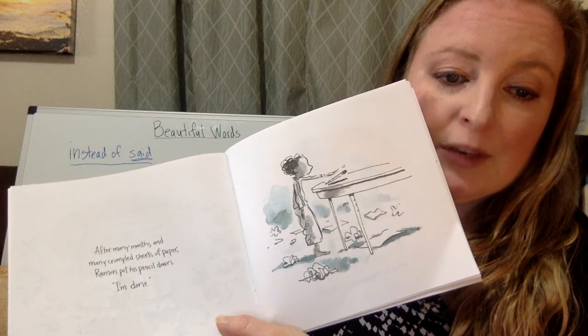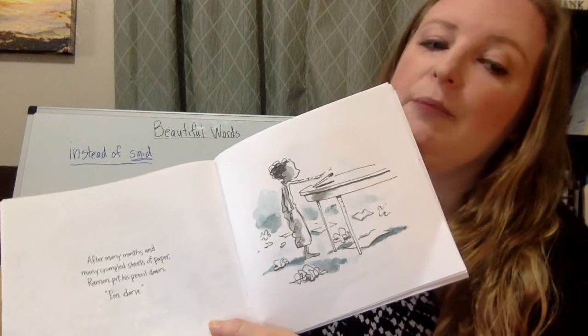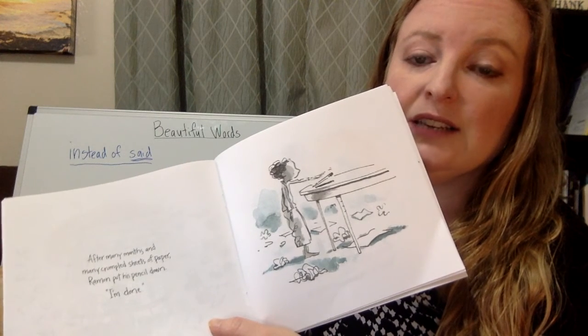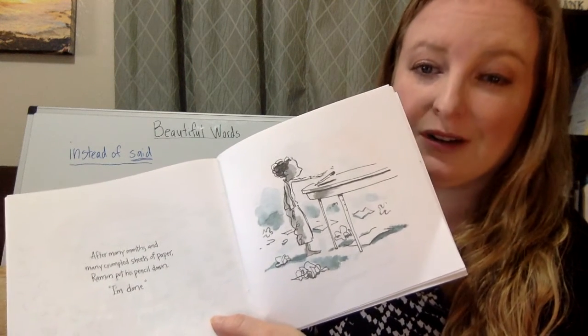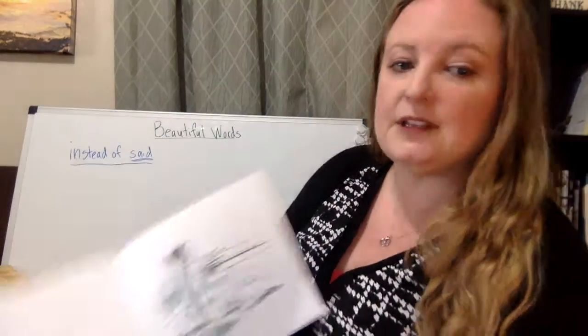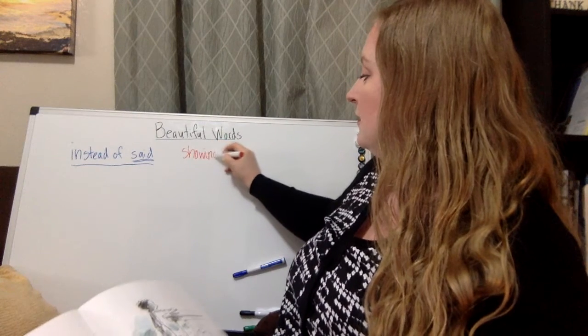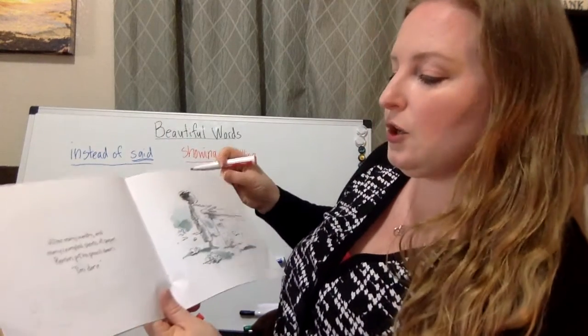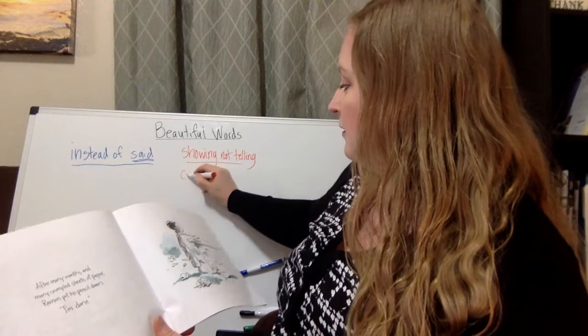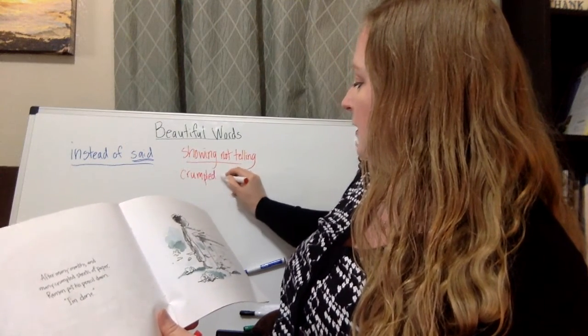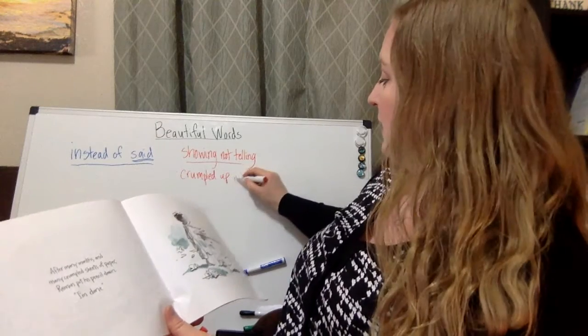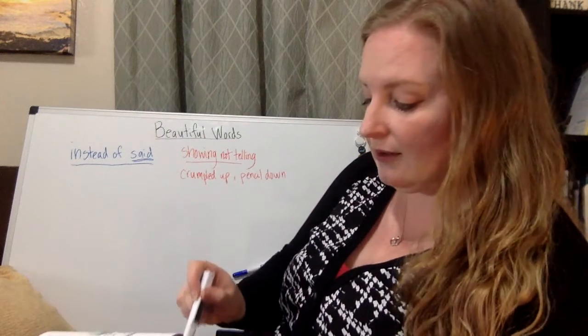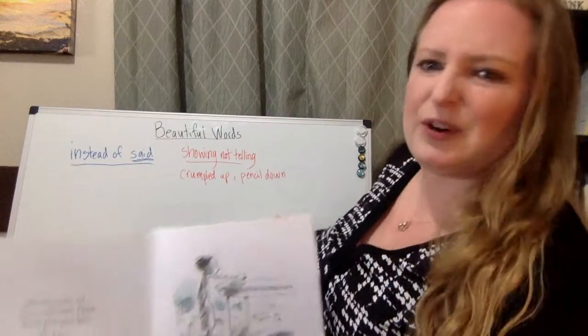Okay, so crumpled sheets of paper and he put his pencil down - I'm done. I like how Peter Reynolds here doesn't just say that Ramon gave up. He kind of shows you with his beautiful words. Crumpled up and put his pencil down. That's how you're showing what's going on in the story, not just telling it. It's much more interesting that way.